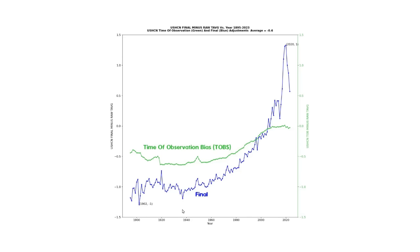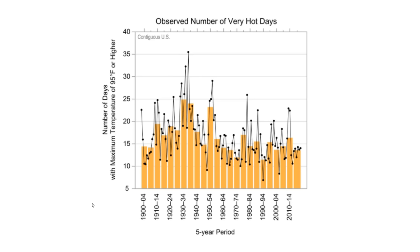So now we're going to take a look and see if this data tampering — or adjustments as NASA and NOAA like to call them — are legitimate. This graph is from the NOAA state climate summaries, and it shows that hot temperatures in the United States used to be much more common and have declined sharply over the last 80 years. During the 1930s, the United States averaged nearly 25 days over 95 degrees Fahrenheit, or 35 degrees Celsius per year. Now the frequency of 90-degree days is just a little over half what it was during the 1930s, and recent years have been among the lowest on record.